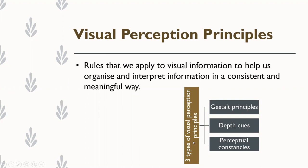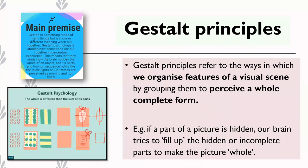The three types of visual perception principles are gestalt principles, depth cues, and perceptual constancies. This is more of a visual-based topic, so if you're able to look at the images on each slide and understand how they portray a particular way of judging an image, that would basically be most of what this topic is about.